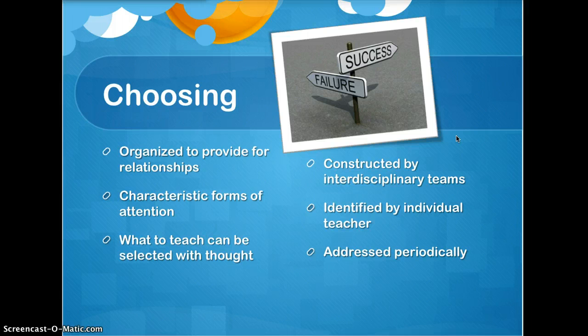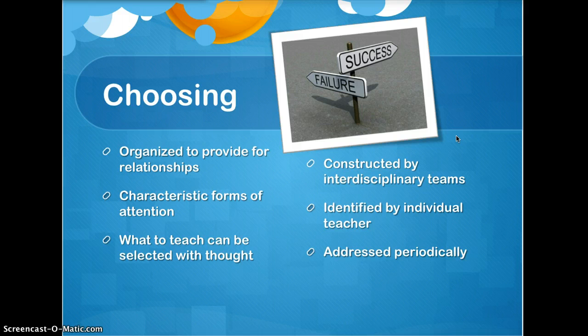You can figure this out by organizing and providing relationships between what you're teaching and caring, incorporating them together. The characteristic form of attention — how we as teachers give our attention to others — is how we can show that we care. What to teach can be selected as long as we are planning ahead with the students' needs in mind. We also need to be aware of what is happening in the public world and address it periodically throughout the year.